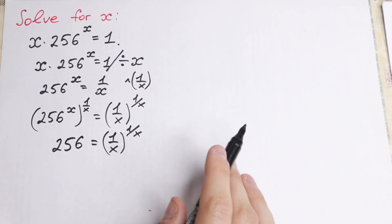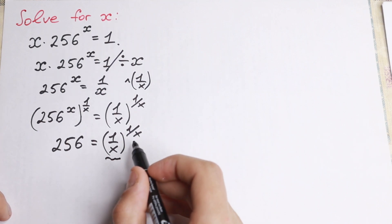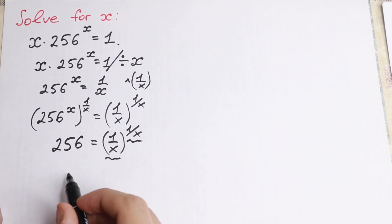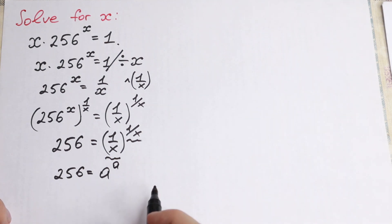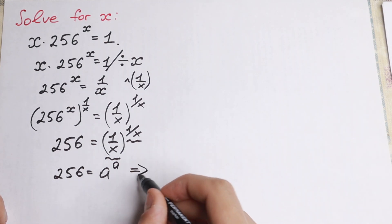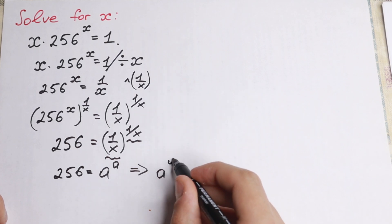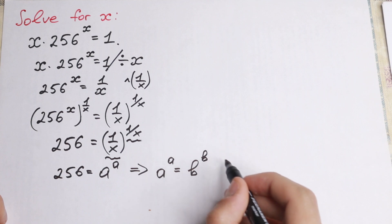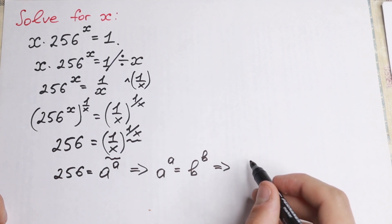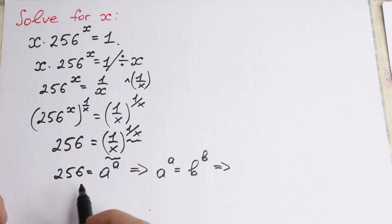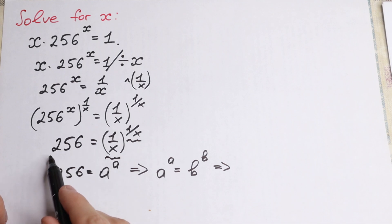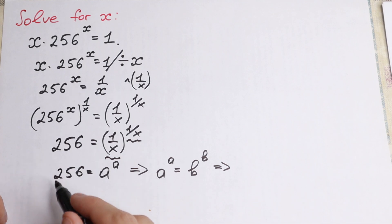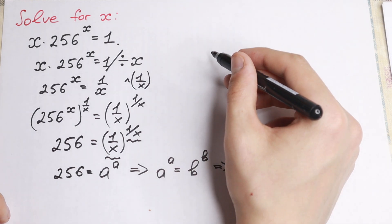Why did I raise to the power 1 over x? Because as you can see, we now have the same power and the same base on the right-hand side — it looks like the form a to the power a. And if we have a^a equal to b^b, we can conclude that a equals b. So we need to create on the left-hand side the same base and same exponent to match this pattern.